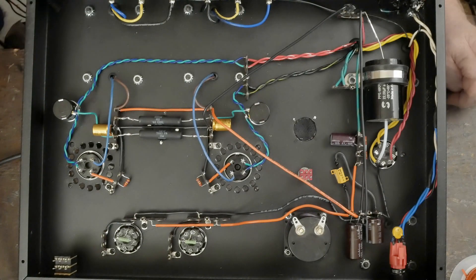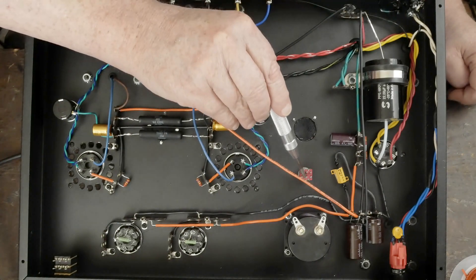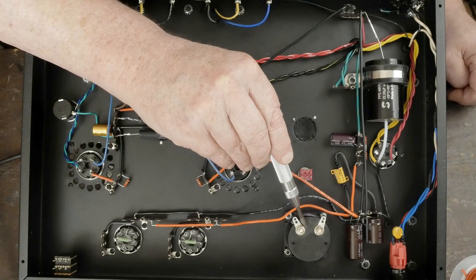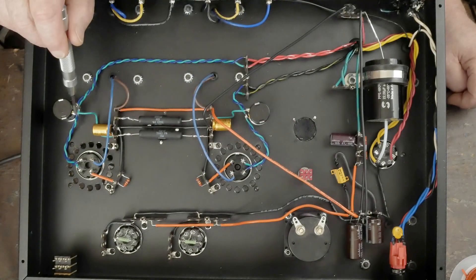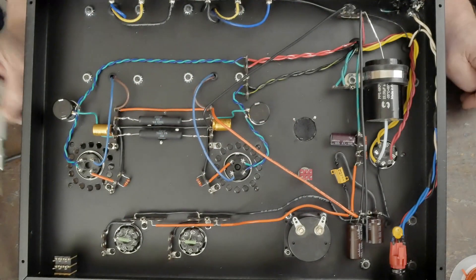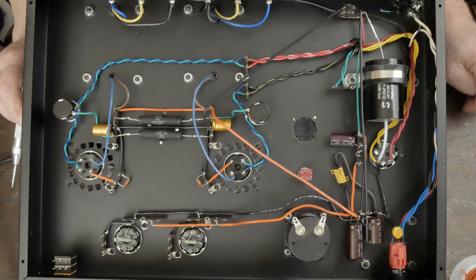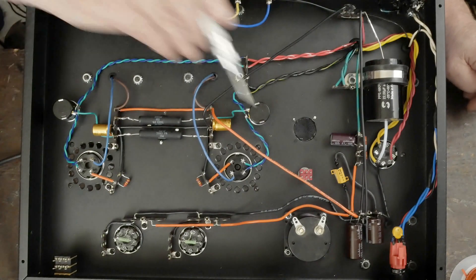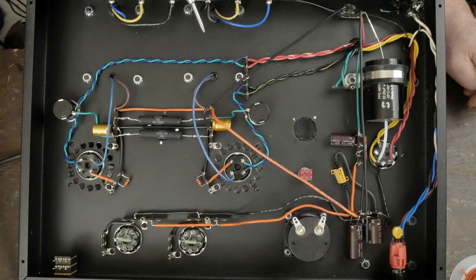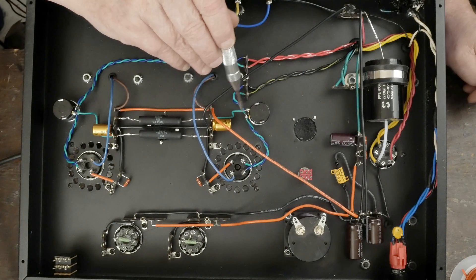Then run this back to the RCA jacks that are going to be in the back of the amp. Finally I need to wire up the switch to this meter to the output tube cathodes.